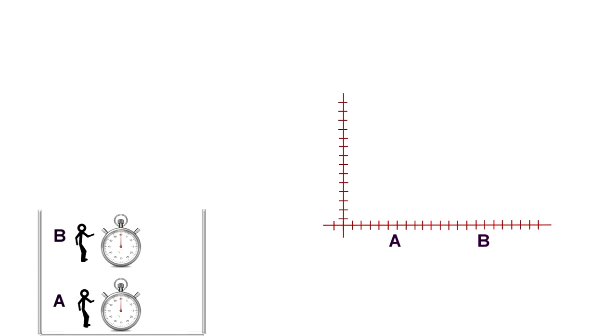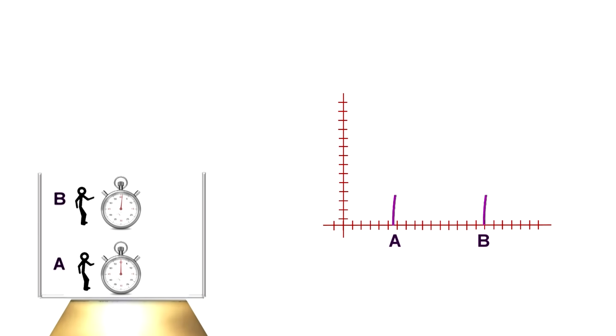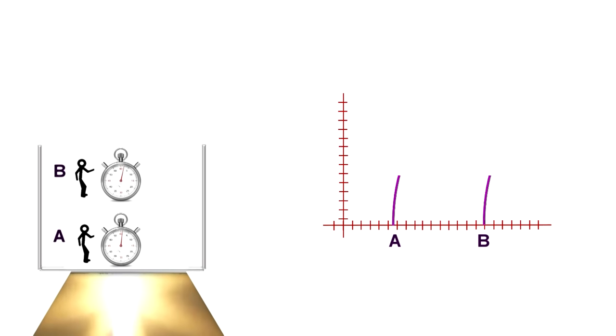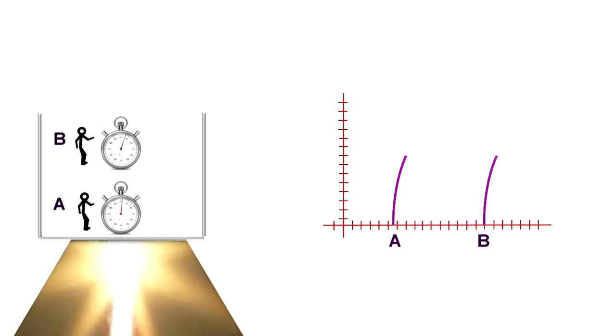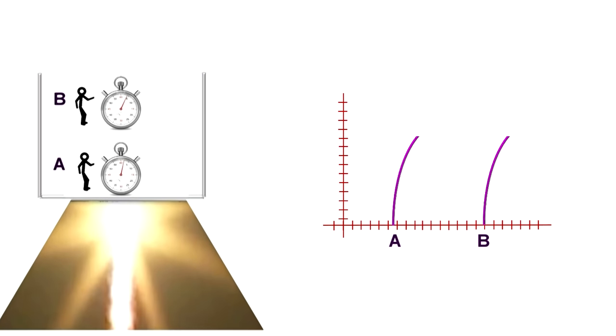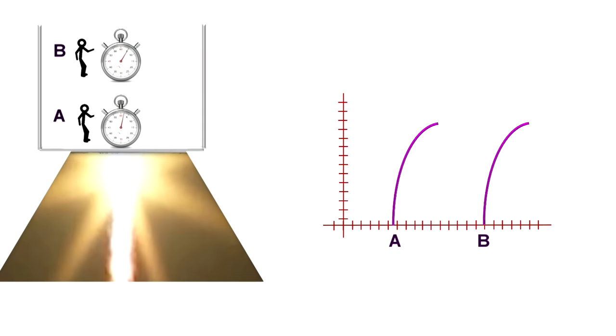Now we can map the movements of A and B in the accelerating elevator to the spacetime graph. The center is the source of the acceleration, or gravity. A is to the right of it, and B a bit further to the right, reflecting their distances from the source of the gravity. As the elevator accelerates, the world lines on the spacetime graph are not straight lines. They curve outwards, because their velocity increases with every second.